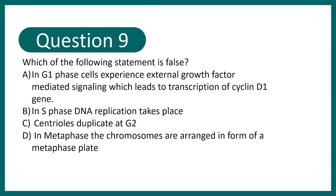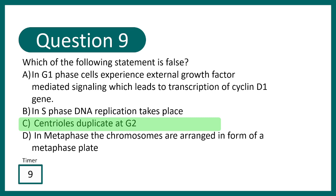Question 9: Which statement is false? In G1 phase, cells experience external growth factor signaling leading to transcription of cyclin D1 gene; in S phase, DNA replication takes place; centrioles duplicate at G2; in metaphase, chromosomes are arranged in a metaphase plate. The correct answer is that centrioles duplicate at G2 — this is false because centrioles already duplicate by S phase, so G2 is too late.